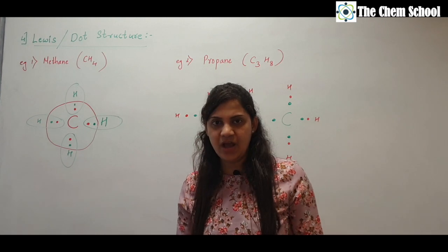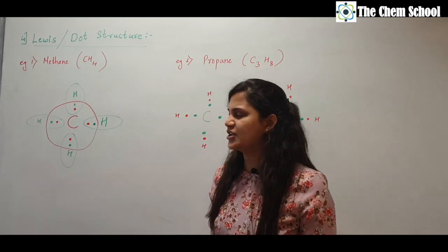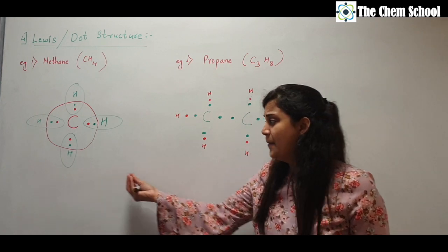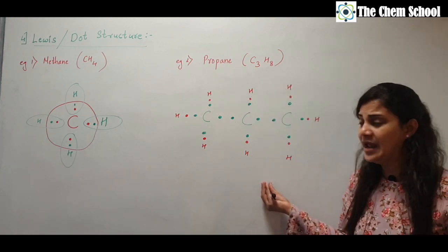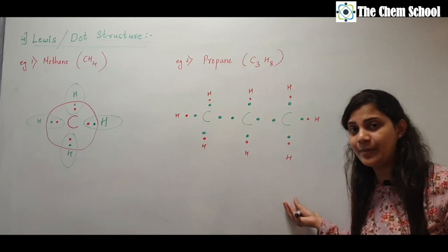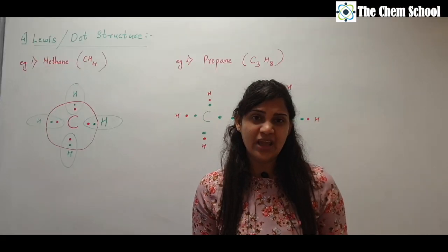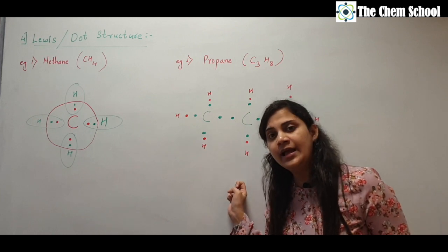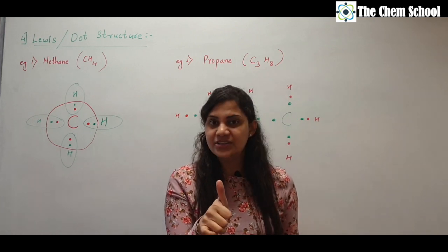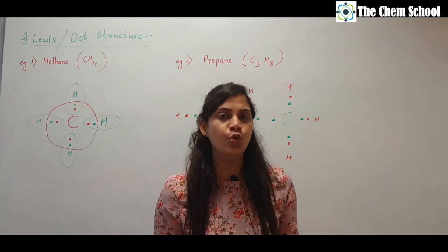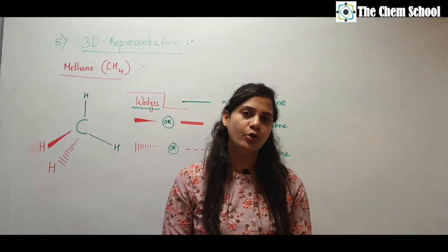Why do we not use Lewis structure much in organic chemistry? Methane was a small molecule, but for propane the structure already becomes very large. Imagine drawing the same dot structure for 10 or 15 carbons — it would be extremely lengthy. That is why in organic chemistry we avoid Lewis structure and stick to the complete structure, condensed structure, or bond line structure, as they are much easier to represent.